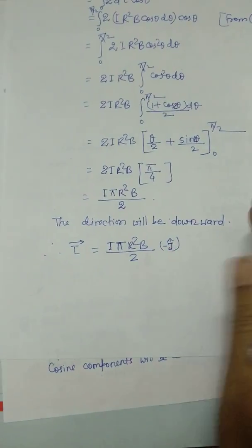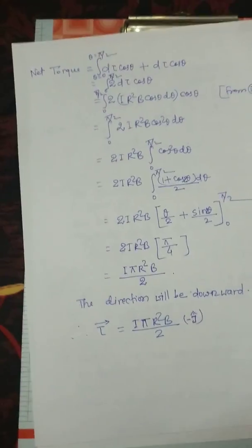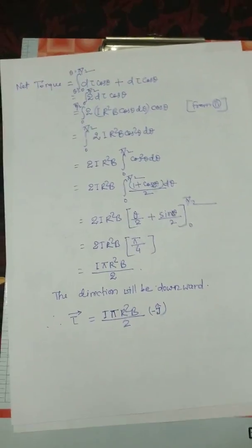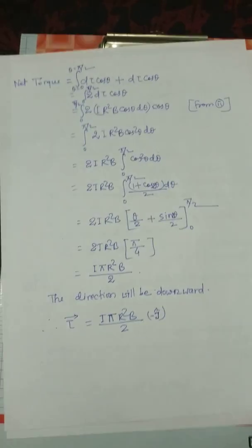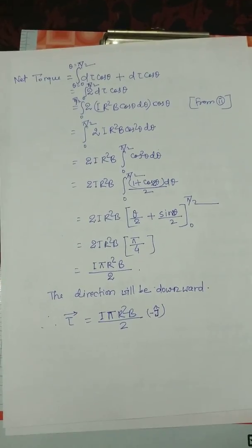The direction of the net torque is downward, written as minus j-hat. Hope you understood this. Thank you.